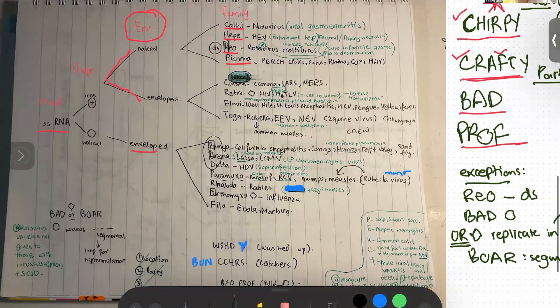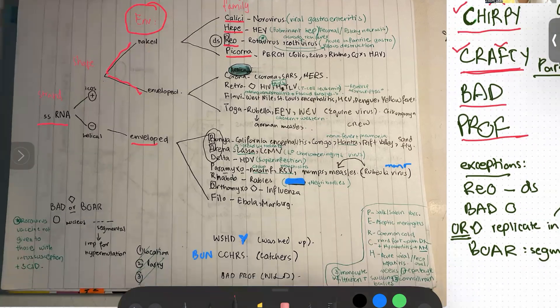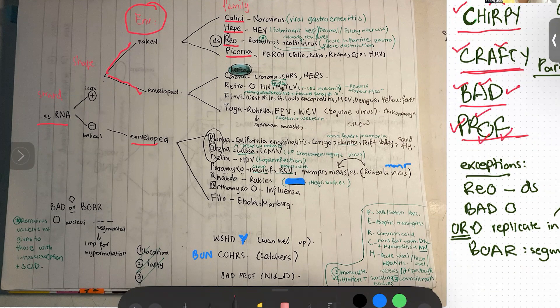And for bad prof, we have Bunya, Arena, Delta, Paramyxo, Rhabdo, Orthomyxo, and Filo — or Filo, whatever you want to call it.